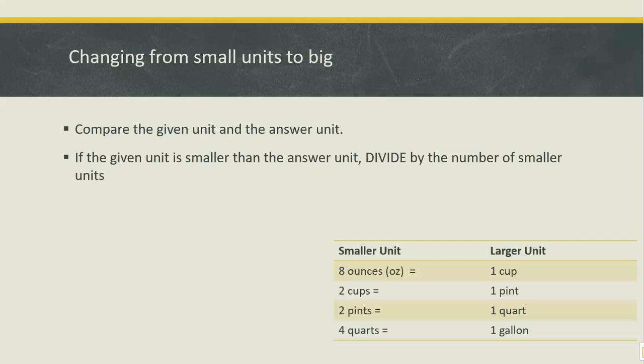If what we're starting with is the smaller unit, we're going to divide by the number of smaller units. For example, we would divide when changing ounces to cups. Cups are bigger than ounces, so we would need less of them.